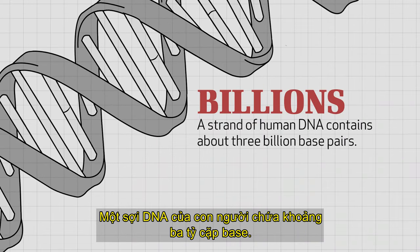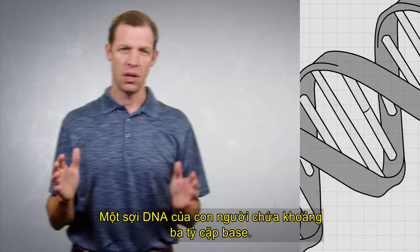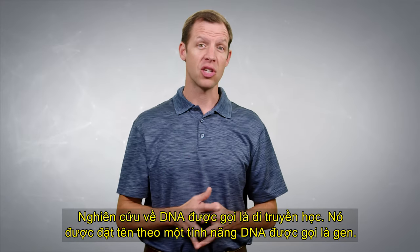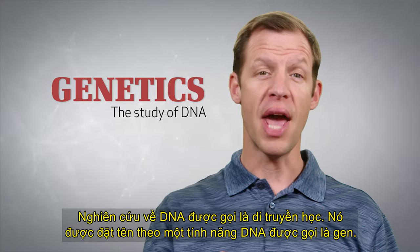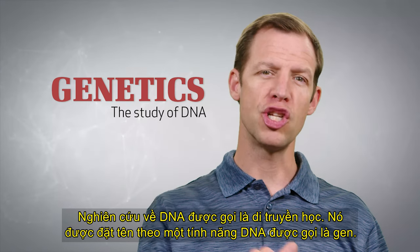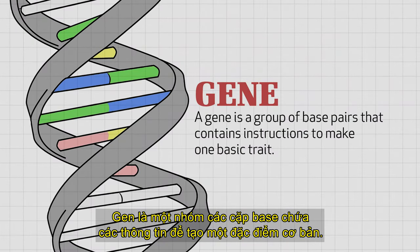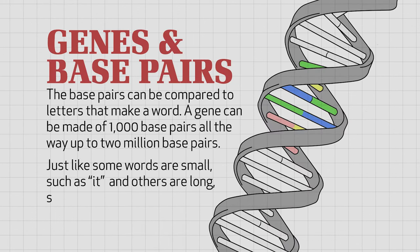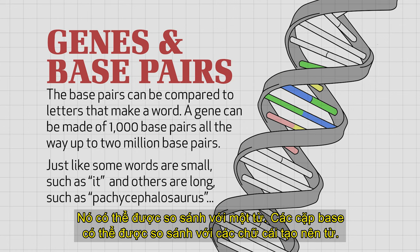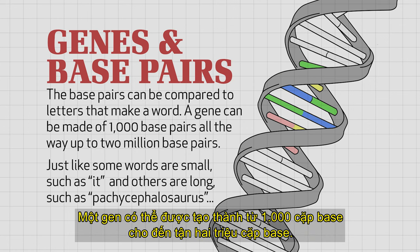A strand of human DNA contains about 3 billion base pairs. You may know that the study of DNA is called genetics, named after a DNA feature known as a gene. A gene is a group of base pairs that contain instructions to make one basic trait. A gene can be made up of a thousand base pairs all the way up to 2 million base pairs.